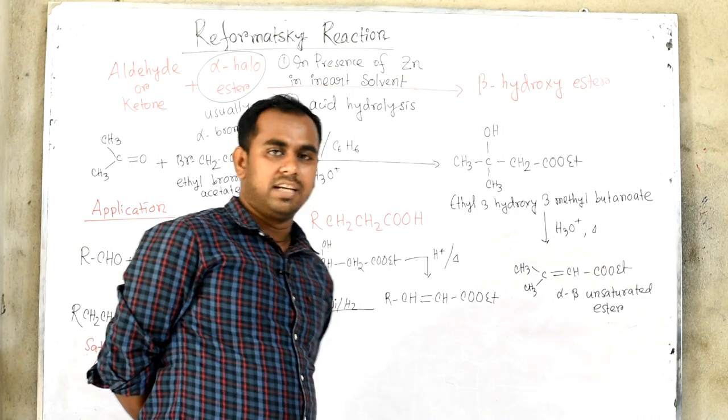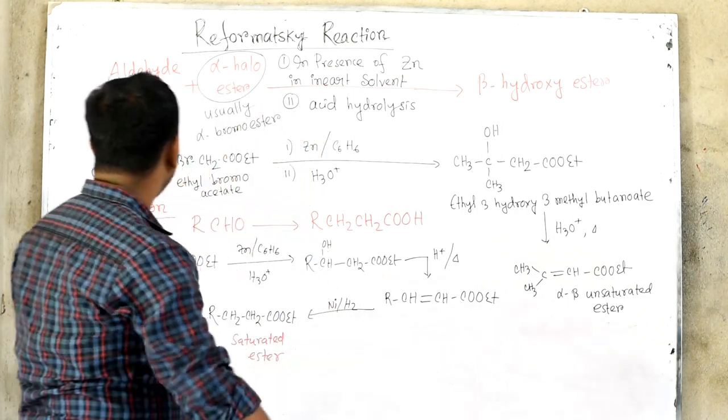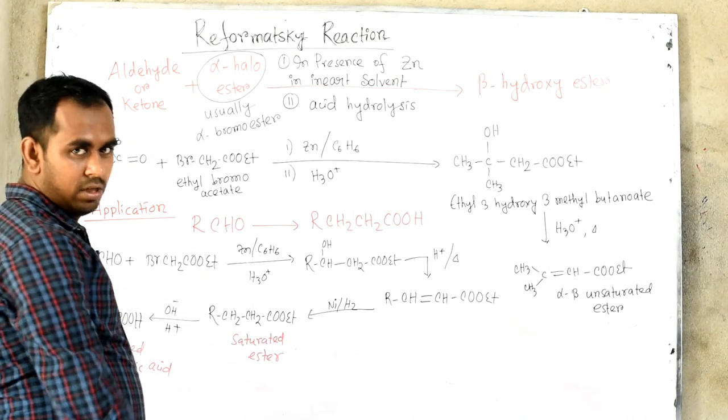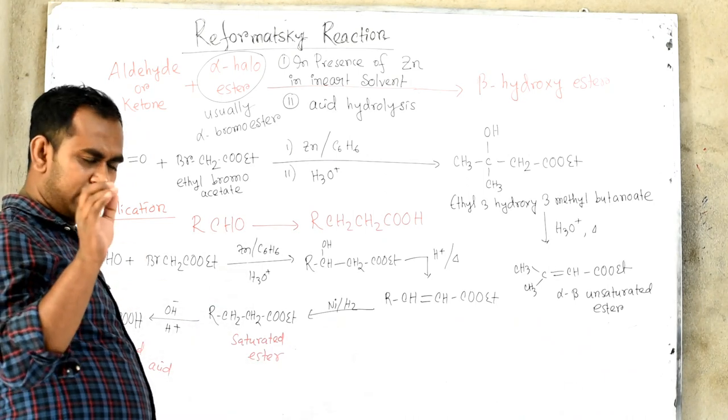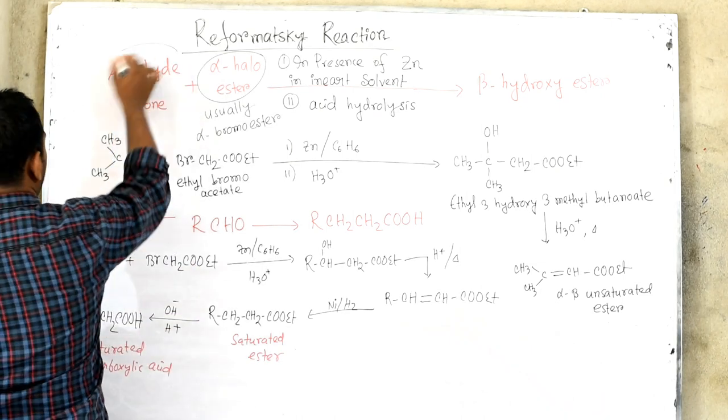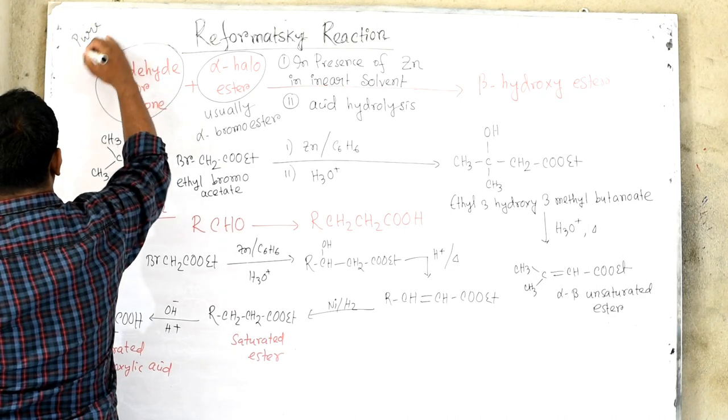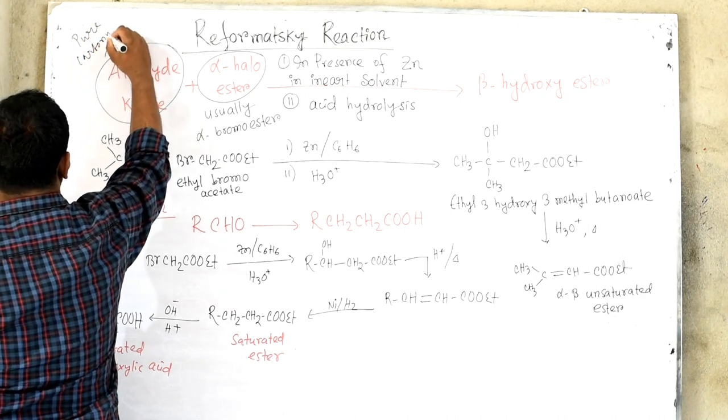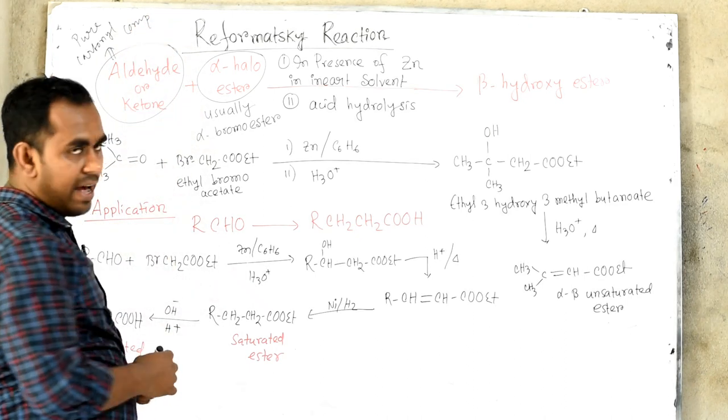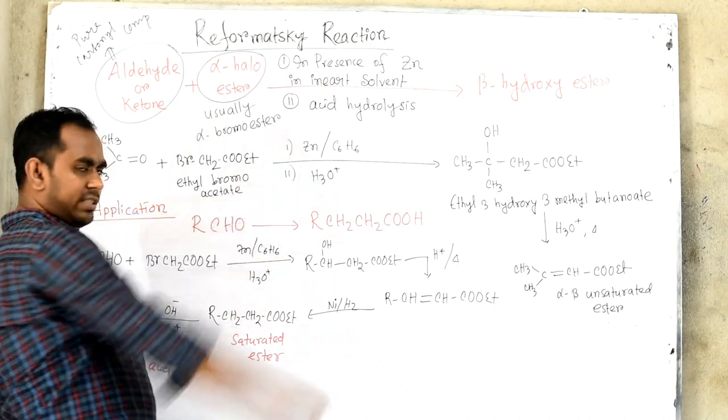We are going to discuss the reaction of Reformatsky. What is the pure carbonyl compound? This is also called alpha-haloester. Normally, what is the principle of alpha-bromoester?